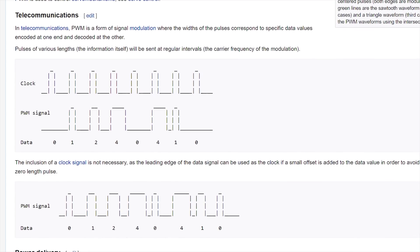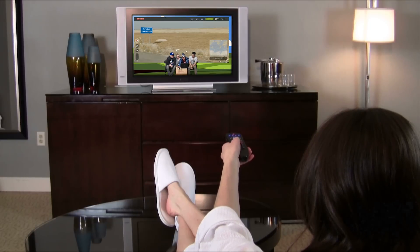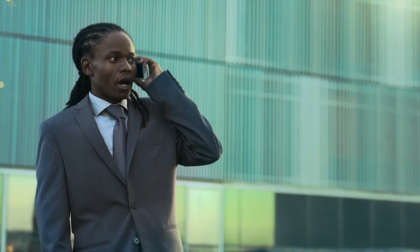PWM can be used to transmit data between two devices, where pulses of different lengths represent the data being transferred. This is how your TV remote switches channels, and how data is transmitted from cell towers to your phone.